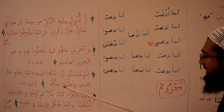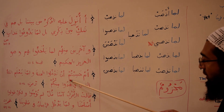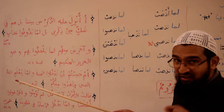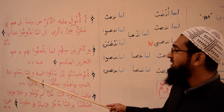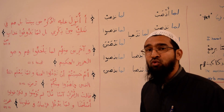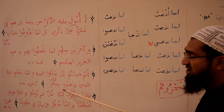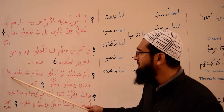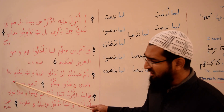Another example is in Surah Aal-Imran. Allah says: أَمْ حَسِبْتُمْ أَن تَدْخُلُوا الْجَنَّةَ — Do you think that you will enter into Jannah? وَلَمَّا يَعْلَمِ اللَّهُ الَّذِينَ جَاهَدُوا مِنكُمْ — literally: Allah has not yet known those who strove in Allah's cause from among you. He has not yet known — meaning those who did jihad, struggling in the path of Allah subhanahu wa ta'ala.